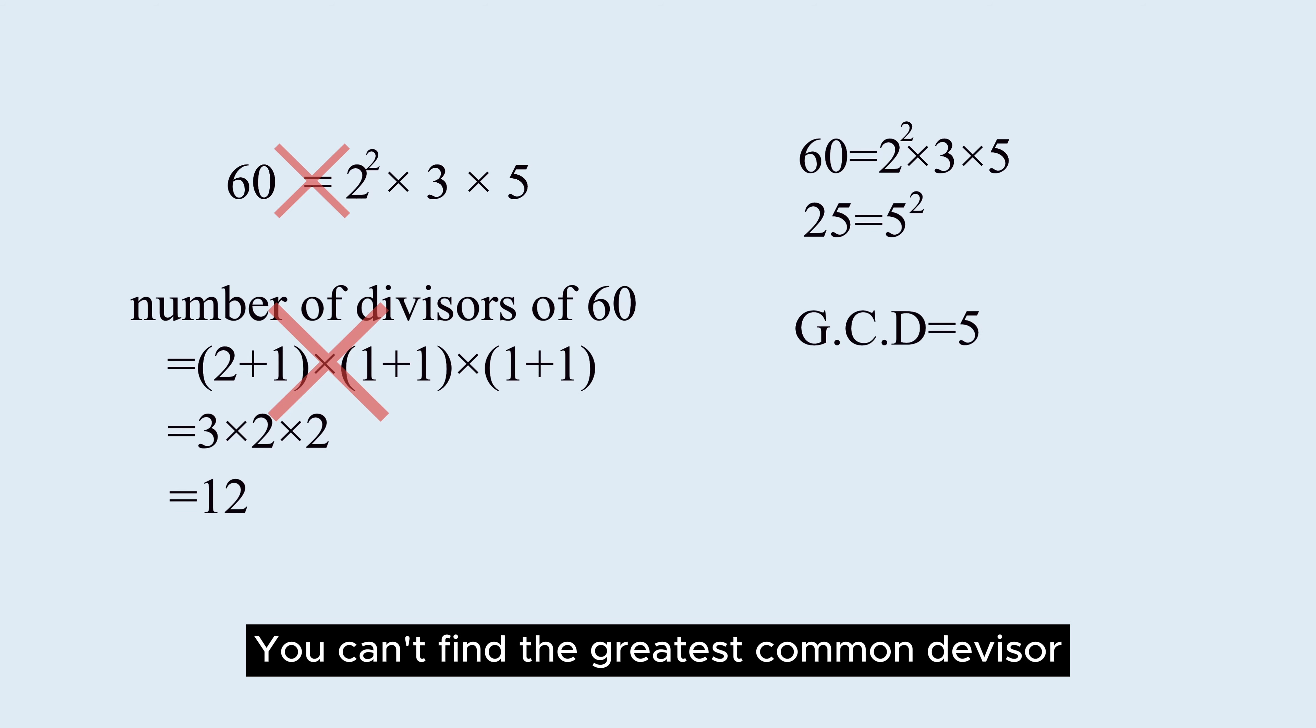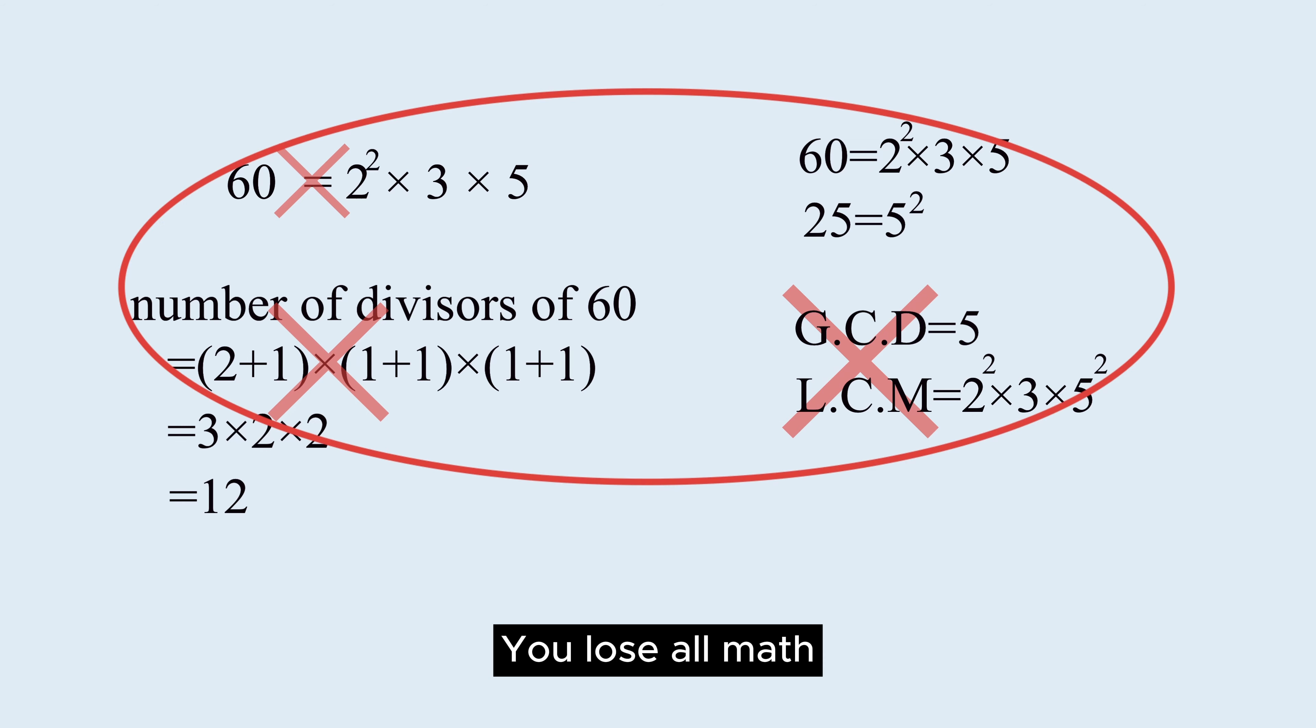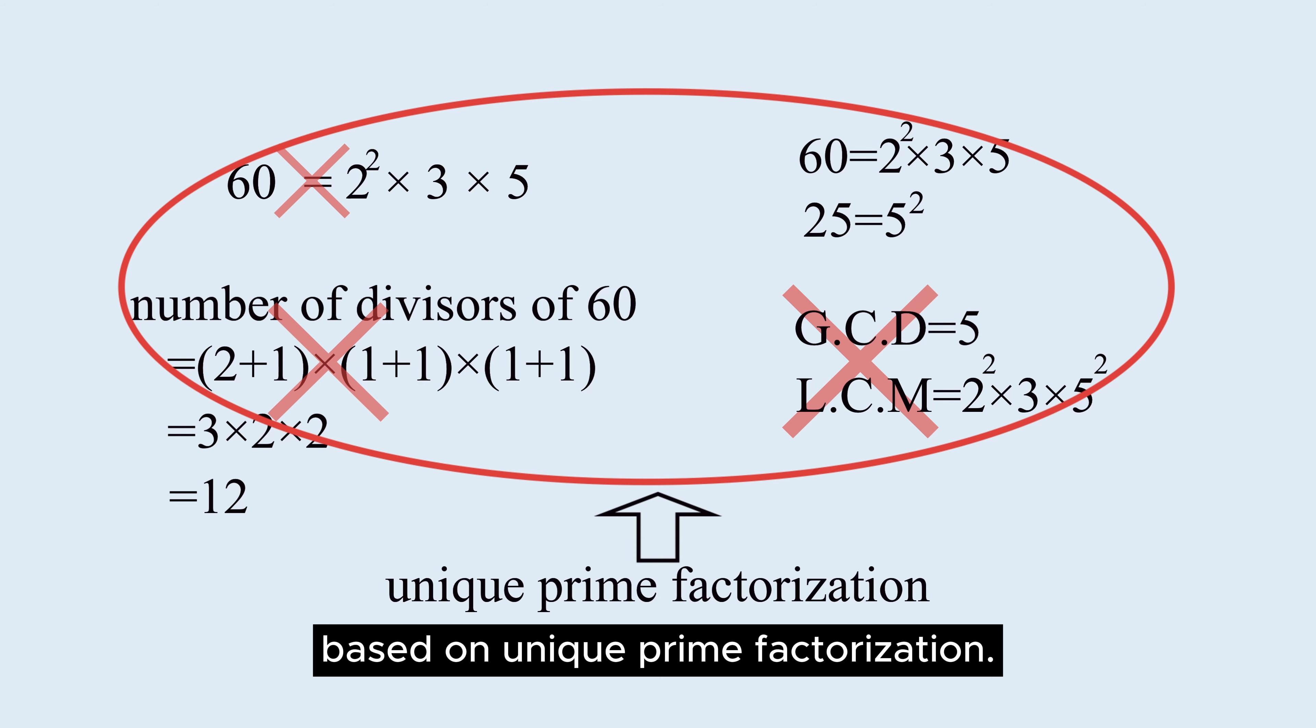You can't find the greatest common divisor or least common multiple of 60 and 25. You lose all math based on unique prime factorization.